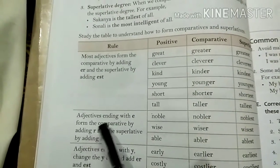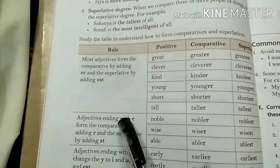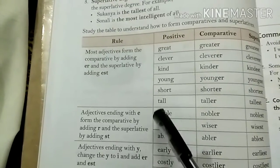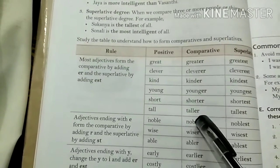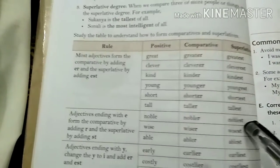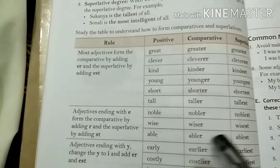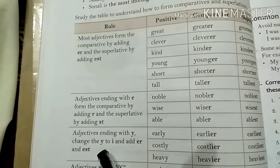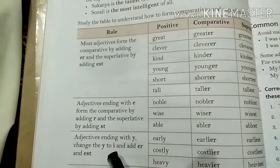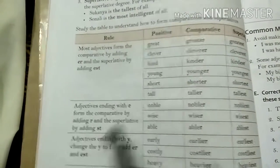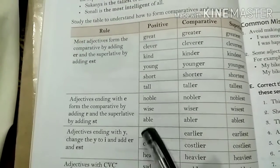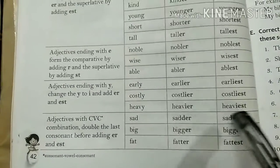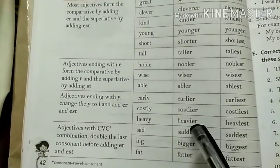Adjectives ending with E form the comparative by adding R and the superlative by adding ST: noble/nobler/noblest, able/abler/ablest. Adjectives ending with Y — change the Y to I and add ER or EST: early/earlier/earliest, costly/costlier/costliest, heavy/heavier/heaviest.